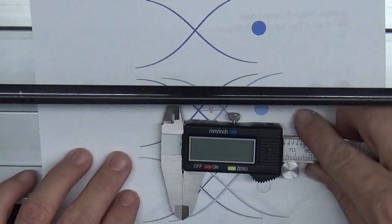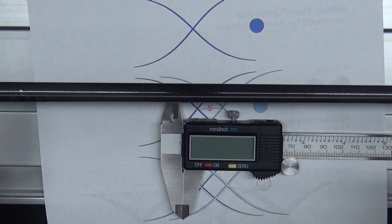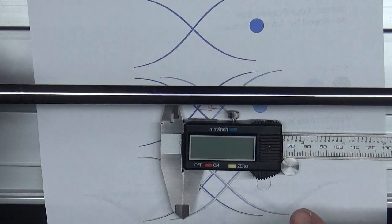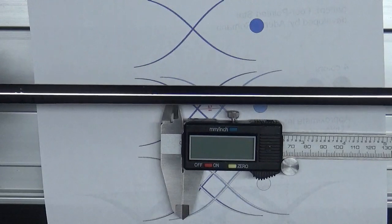Once you have laid this out, or once you have marked your axis, let's say this is your zero, and then you flip it around and this would be your 180.